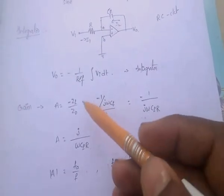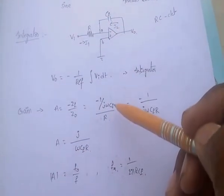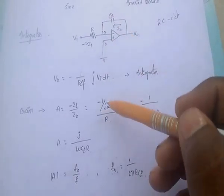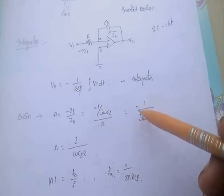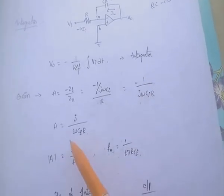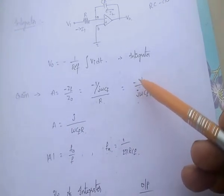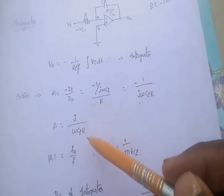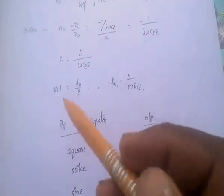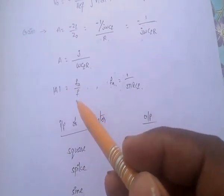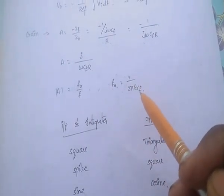Gain A equals minus ZF by Z. ZF means feedback capacitor impedance equals 1/jωCF. So A equals minus 1/(jωCF) divided by R, which simplifies to mod A equals FA/F, where FA equals 1/(2πRCF).